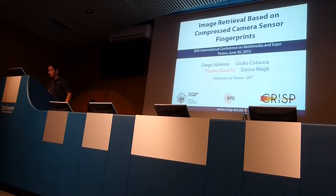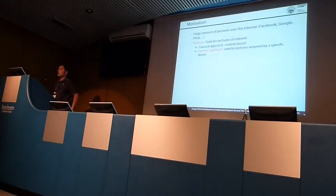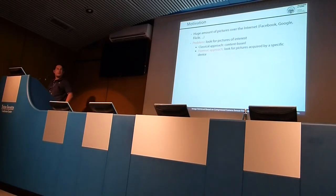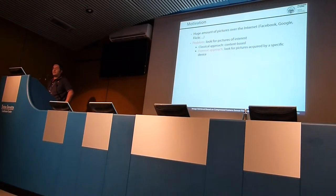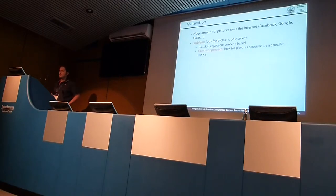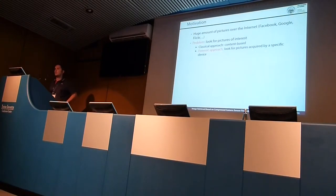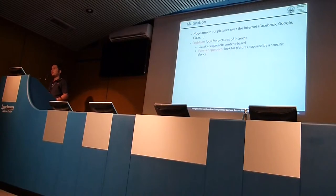What is this talk about? Usually we have a huge amount of pictures that are shared every day over the internet, and we need some tools for categorizing, classifying, and searching in this huge amount of pictures. The classical problem is looking for pictures of interest, and the classical approach is to look for pictures that have some similar content — this is content-based image retrieval.